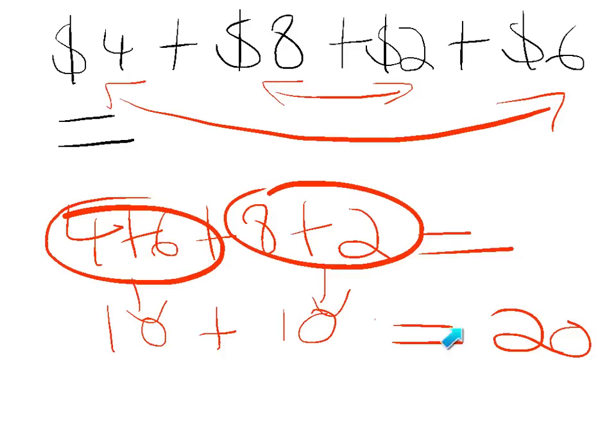So four plus six, eight plus two, 10 plus 10 makes 20. So very quickly we can add that together to make 20. Again, we've looked for the compatible numbers.